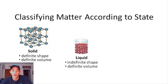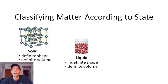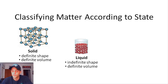In liquid matter, the atoms or molecules are still very close together — about as close as in solid matter — but they're not bound by the same constraints. They are free to move around and past one another. It is for this reason that liquids have a definite volume but an indefinite shape; they will take the shape of whatever container they're in.